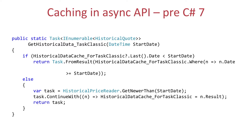When we return the data from the cache, we can return synchronously from this method. Unfortunately, before C# 7, if you offered an asynchronous API, you still had to allocate a task — typically done with Task.FromResult. If this is in a tight loop and most of the time the historical data is in the cache, then you always allocate a task object on the heap just to satisfy the asynchronous API.